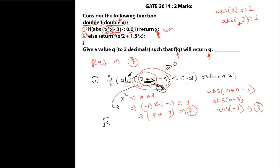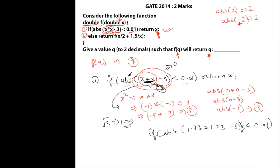If we take the square root of 3, we get 1.73. So if we compute ABS(1.73 * 1.73 - 3), we can make this complete statement less than 0.01. Therefore, we pass X = 1.73, and the answer to this question is 1.73.